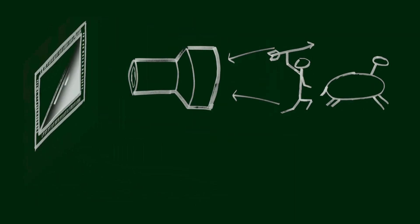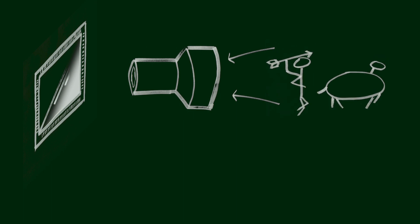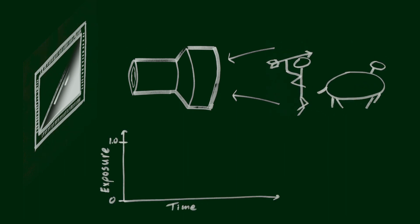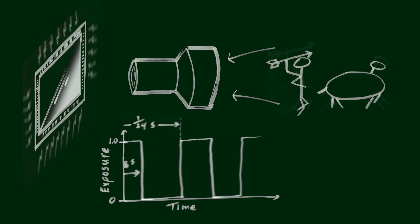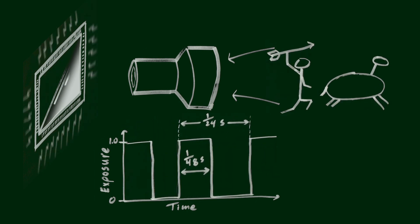In digital cameras, the same convention is used. The film and mechanical shutter are replaced with a digital sensor that is only sensitive some of the time. If we want the commonly used 180-degree shutter angle, then the digital sensor will be sensitive to light for 1/48th of a second for each frame. If we plot the sensitivity to light over time, we see the sharp transitions from closed to open and back again.